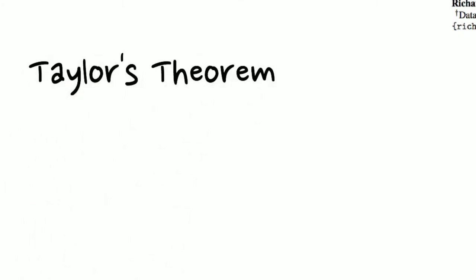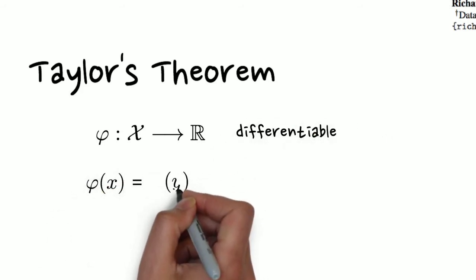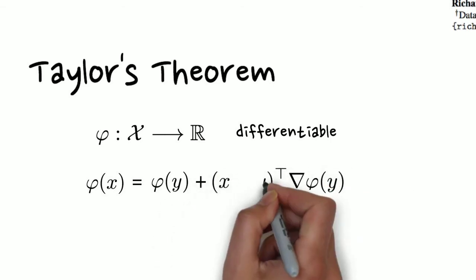Recall Taylor's theorem. For differentiable function phi, we can express phi of x in terms of phi of y at a different point and a term based on its gradient.